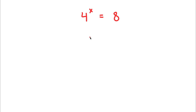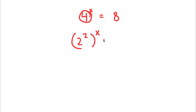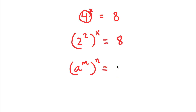I have 4 to the power of x is equal to 8. To solve this, I'm going to first start by rewriting 4 as 2 to the power of 2. So now I have 2 to the power of 2 to the power of x is equal to 8. If I have something in the form a to the power of m to the power of n, this is equal to a to the power of m times n. So 2 to the power of 2 to the power of x equals 2 to the power of 2x.